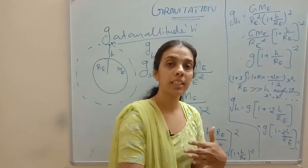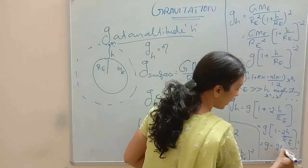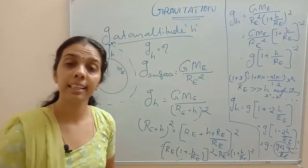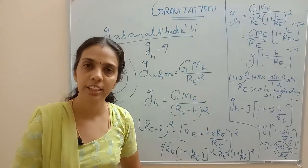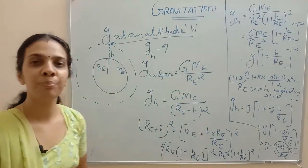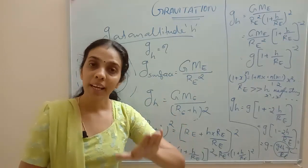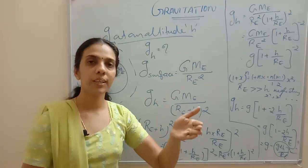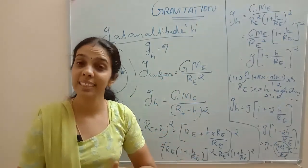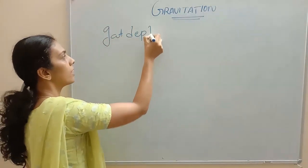The acceleration decreases by a term g times 2H over R_E. So as height increases, g is decreasing. Now we are going to study what happens to the acceleration due to gravity if an object goes to a depth — acceleration due to gravity at a depth D.